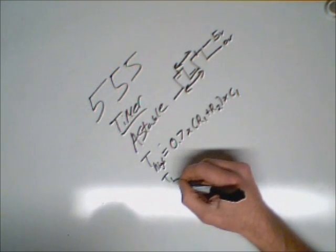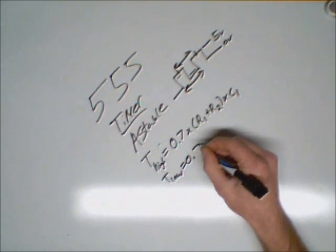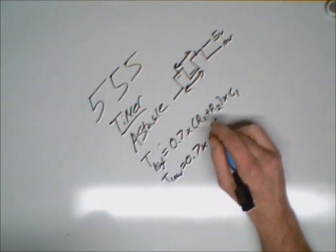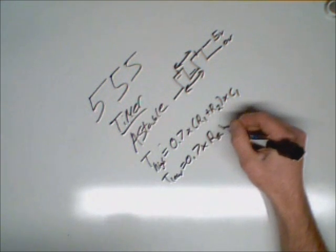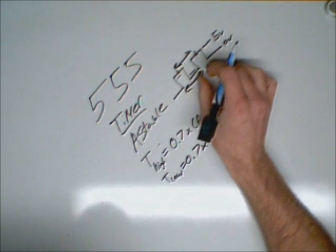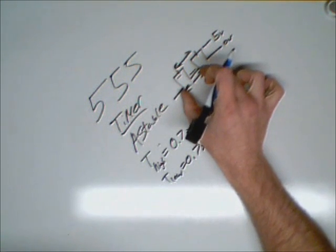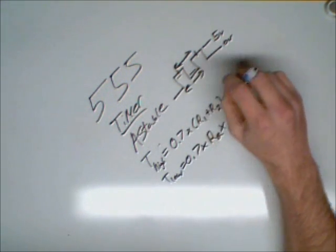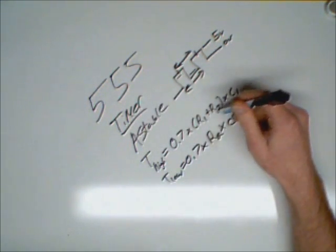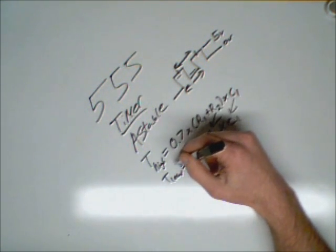And to figure out the time low, you're going to use 0.7 times R2 times capacitor 1. And that will give you the time here, of the bottom of the wave, out of the whole cycle. And using these together, you can first figure out how long you want it to run high, and then bring your R2 and your capacitor 1 value down here, and figure out how long it will run low, or off. That's on and off.